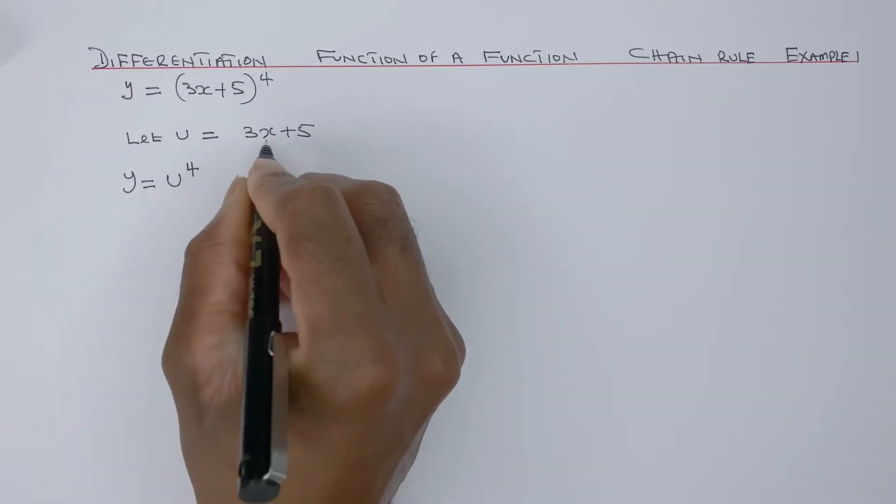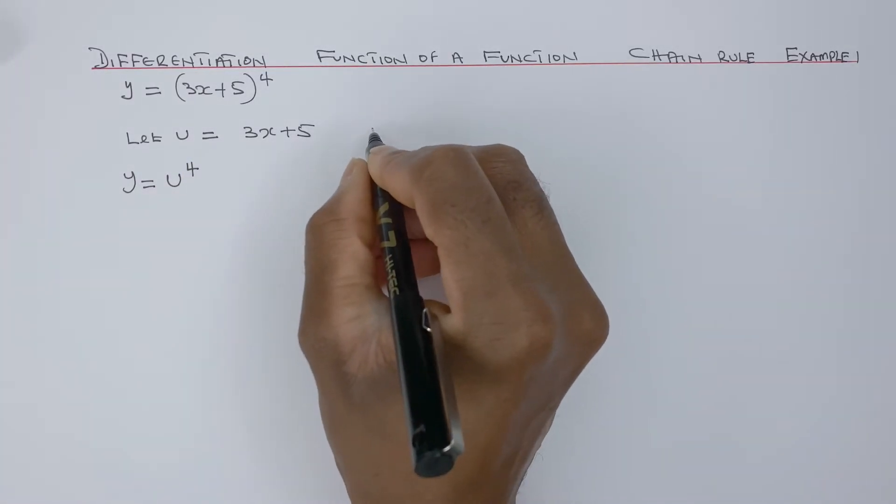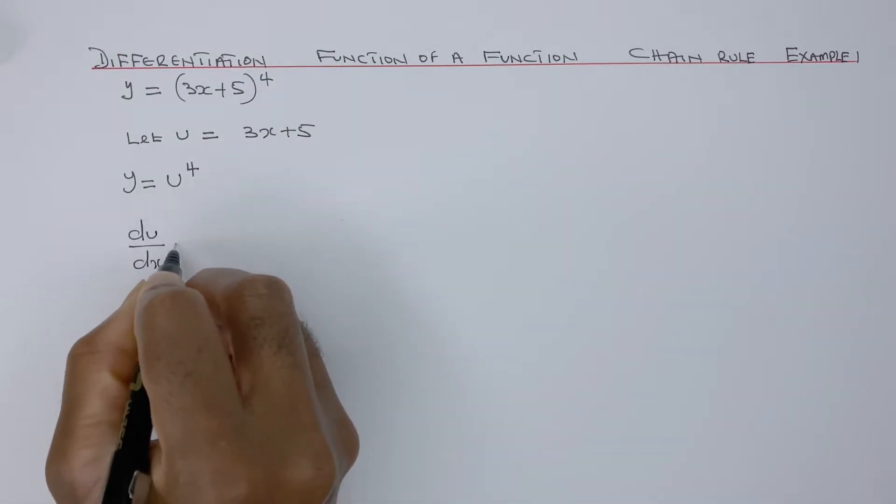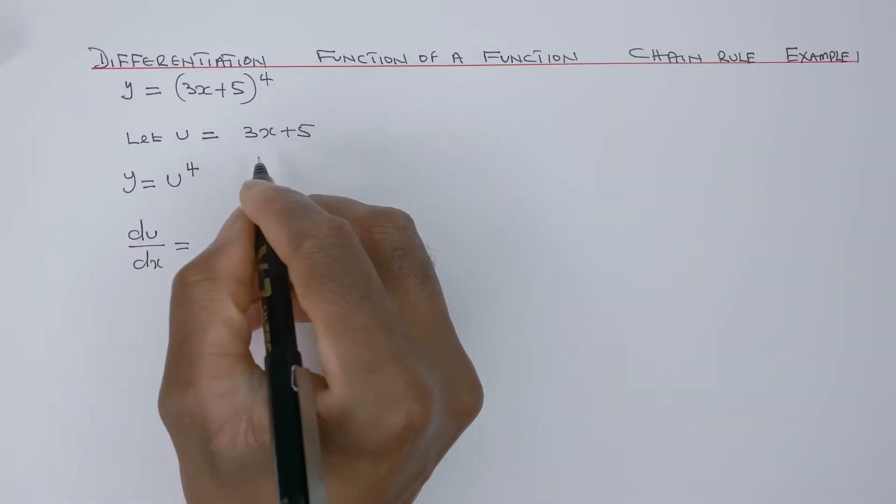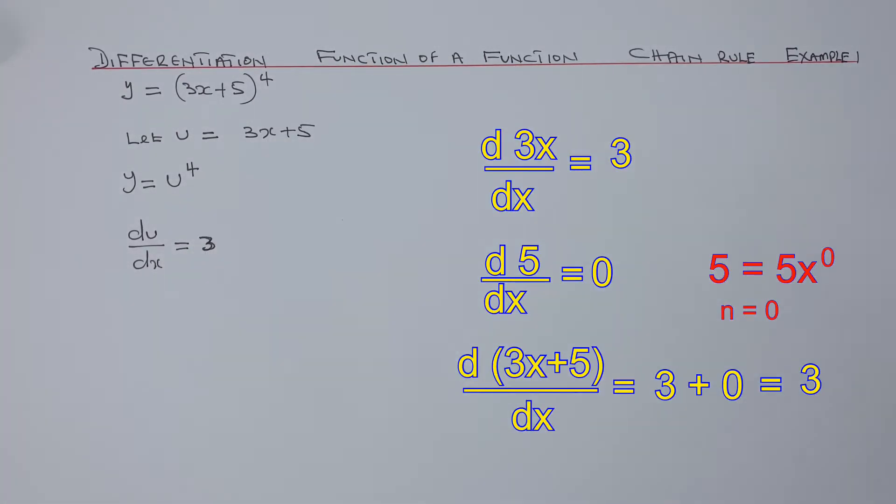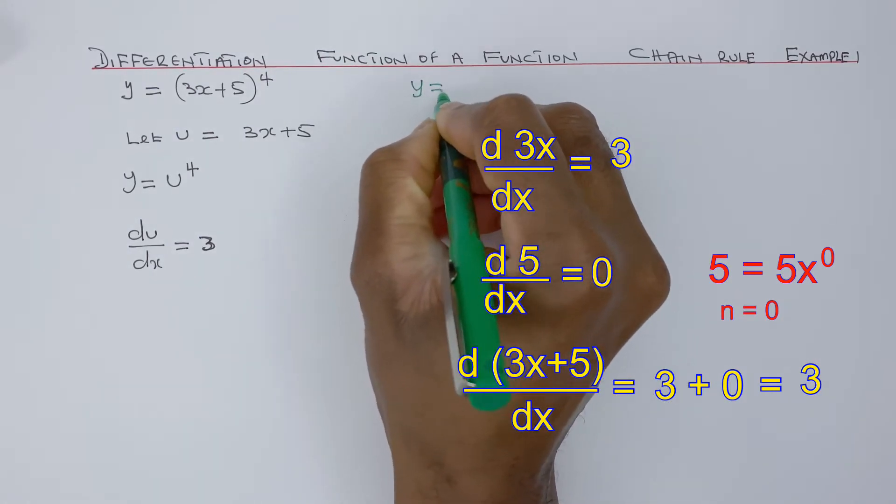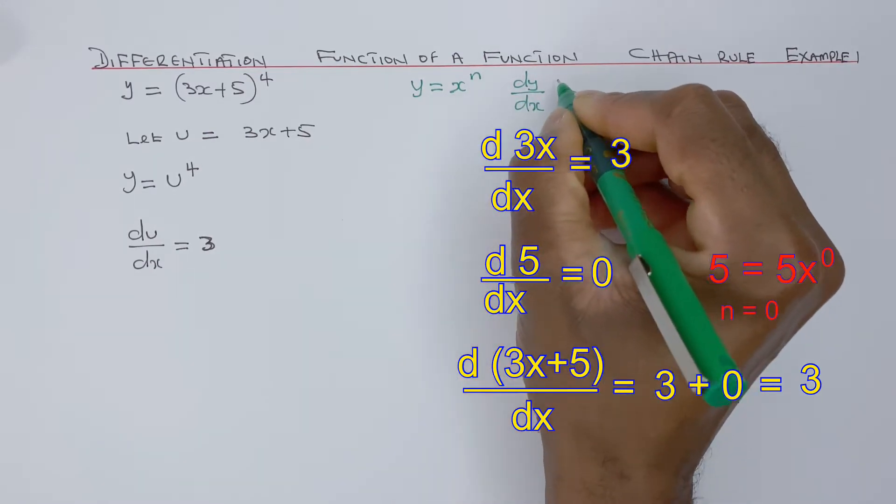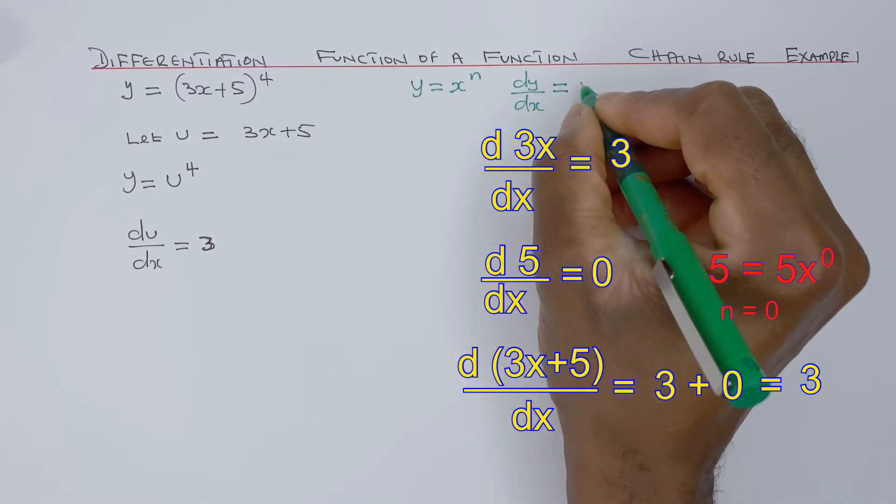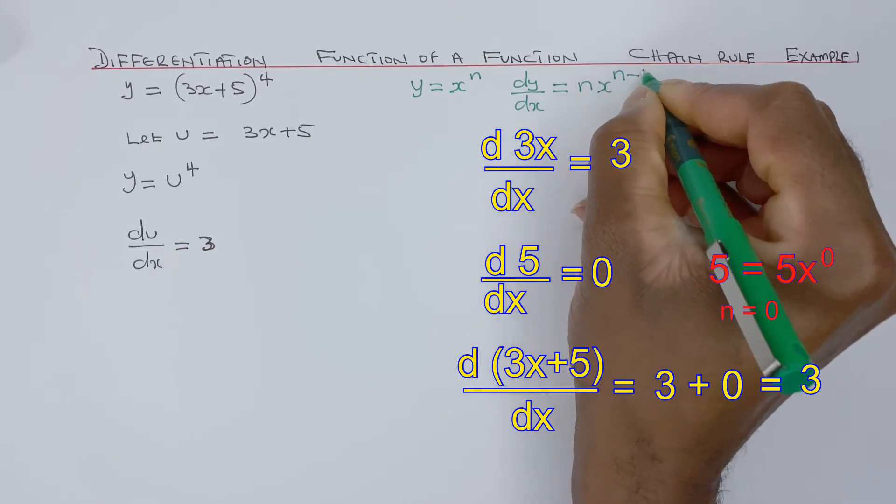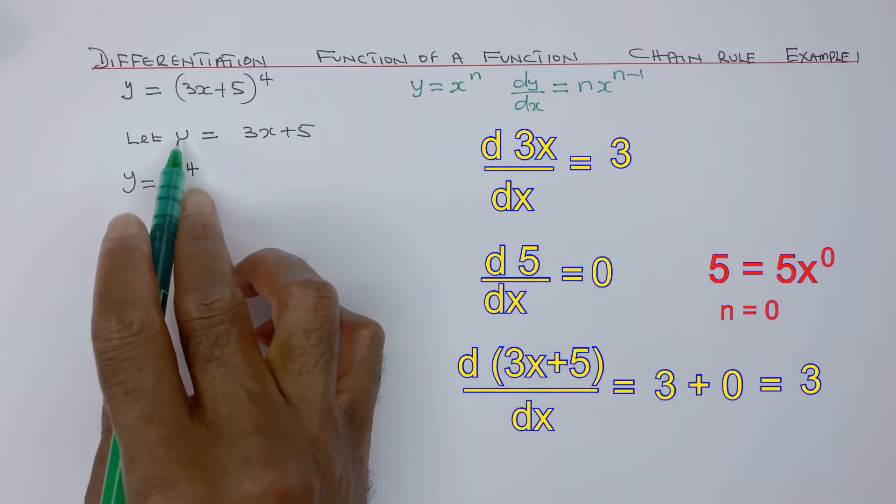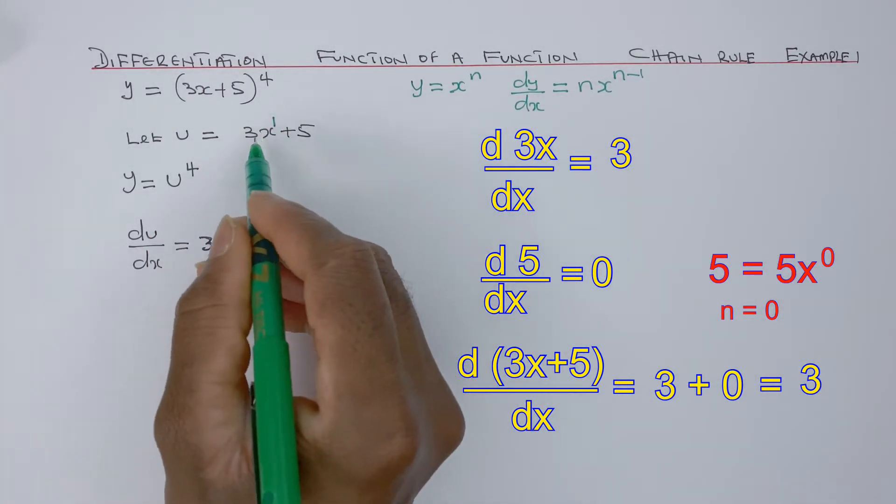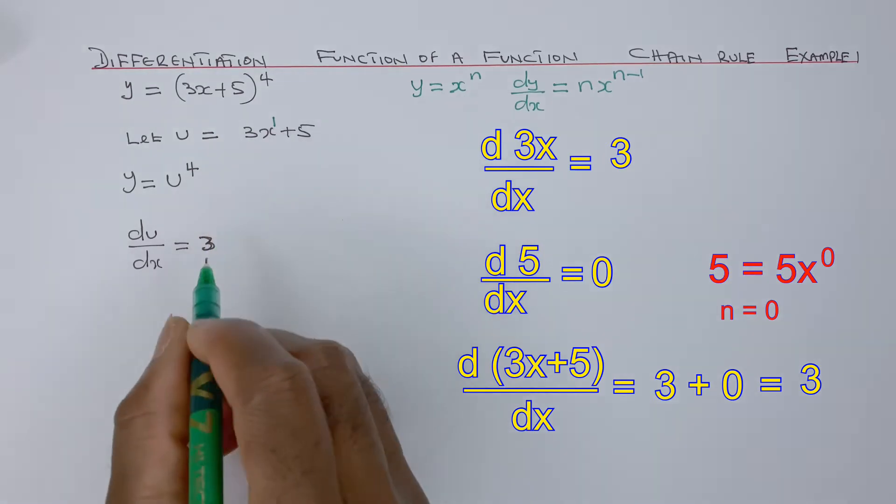We can write u as a function of x, so du/dx equals, if we differentiate that we just get 3. If we have a function y equals x to power n, then dy/dx will equal n times x to power n minus 1. But now we have u as a function of x. x here is to power 1, so that would be 1 times 3, that's 3.